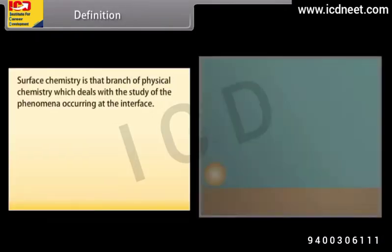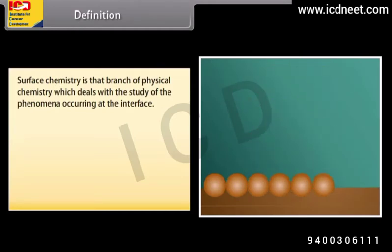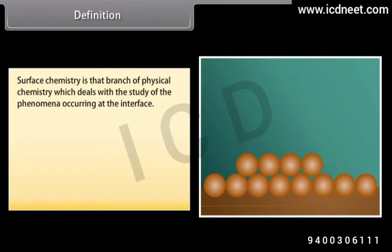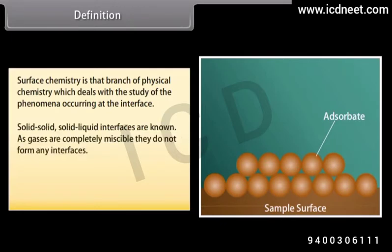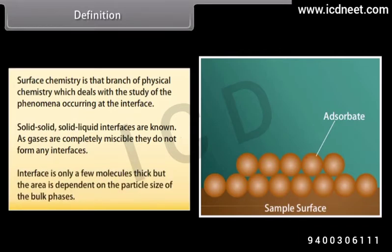Surface chemistry is that branch of physical chemistry which deals with the study of the phenomena occurring at the interface, that is, the boundary separating two bulk phases. Solid-solid and solid-liquid interfaces are known examples. As gases are completely miscible, they do not form any interfaces. An interface is only a few molecules thick, but the area is dependent on the particle size of the bulk phases.